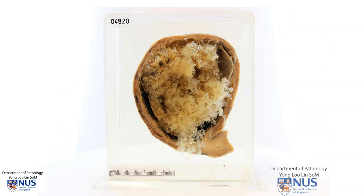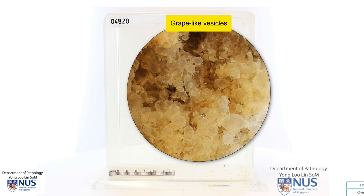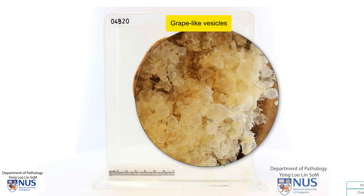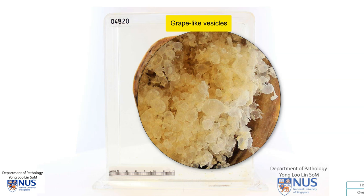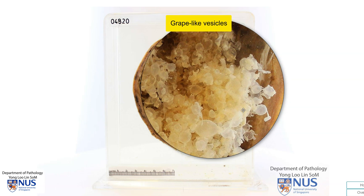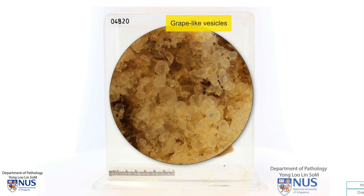The pathology is seen mainly within the uterine cavity, and we can actually make out these masses of grape-like vesicles. Let me just magnify this. We can see that each one appears to be quite translucent, almost like a little balloon or a blister, and these are termed grape-like vesicles.